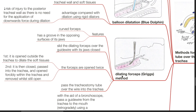Dilating forceps — Griggs method: the forceps is a curved forceps with a groove in the opposing surfaces of its jaws. Slide the dilating forceps over the guide wire with its jaws closed. The forceps are opened twice: first outside the trachea to dilate the soft tissues, then closed, passed into the trachea, and opened forcibly within the trachea, then removed while still open. Pass the tracheostomy tube over the wire into the trachea.